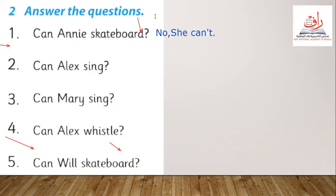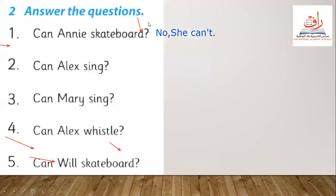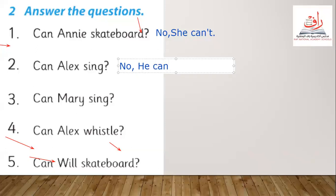Let's go to number two — can Alex sing? Let's go back for Alex: 'My name is Alex. I can't sing, but I can whistle.' So Alex can't sing. Alex is a boy, so we say: No, he can't — with a full stop.